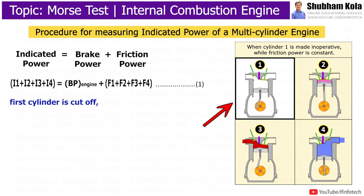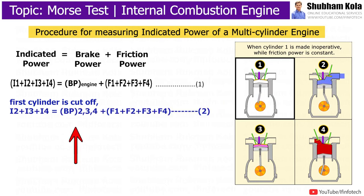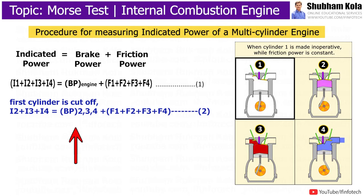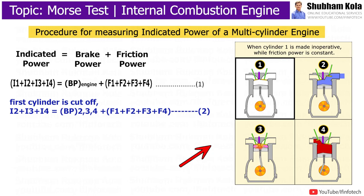This speed is once again maintained to its original value by reducing the load on the engine. Now, equation 1 becomes: i2 + i3 + i4 is equal to the brake power of cylinders 2, 3, and 4 only. This is equation number 2. The above procedure is repeated for the remaining cylinders.